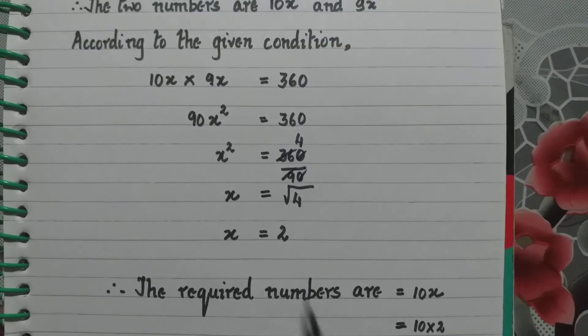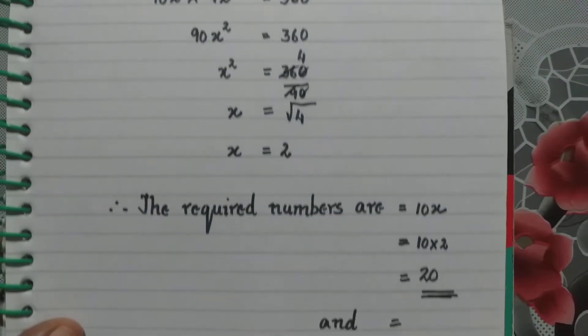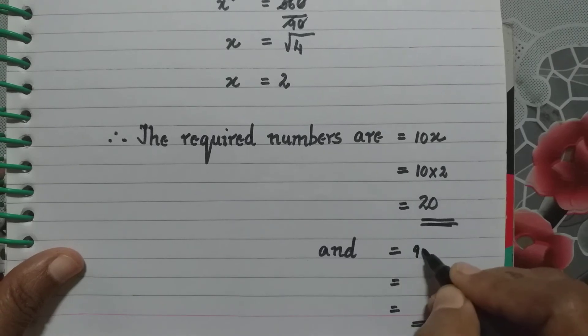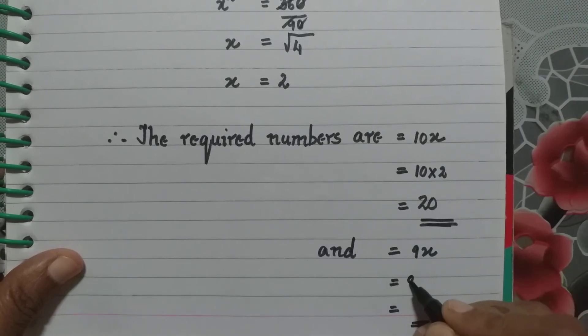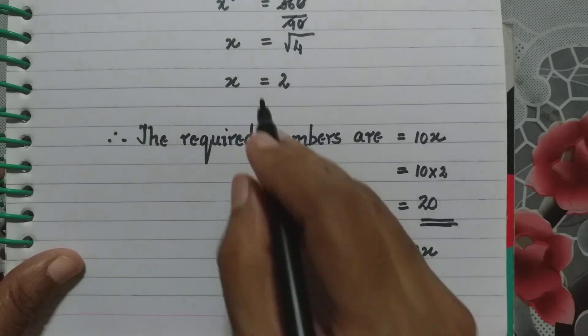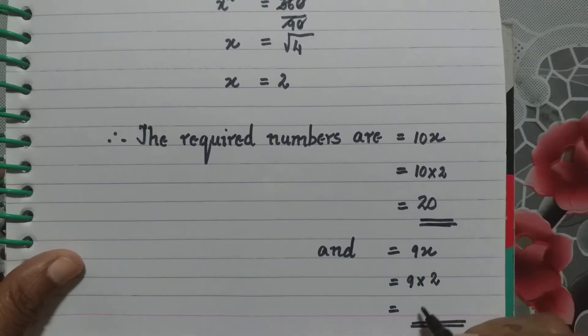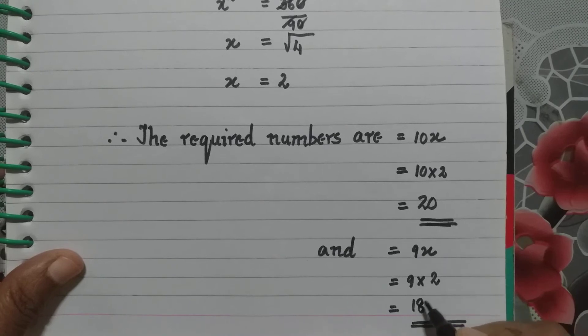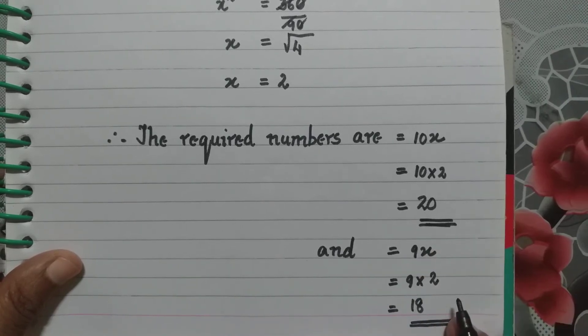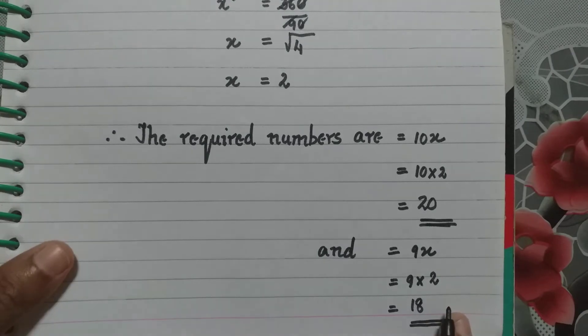What is the second number? 9x. So the second number is 9x which is 9 into x and x is 2, so 9 into 2 which is 18. Therefore the required numbers are 20 and 18.